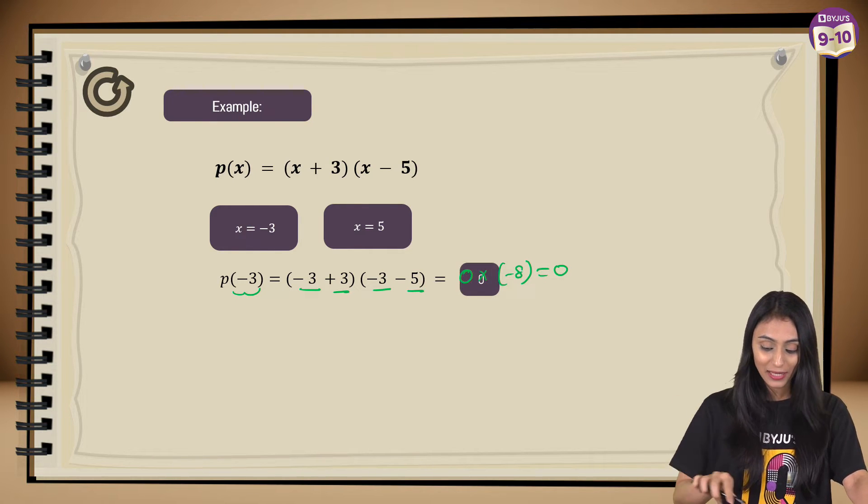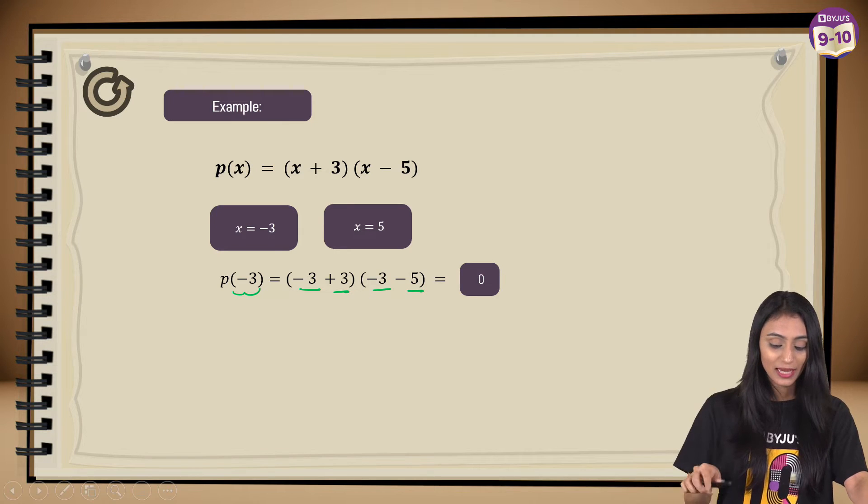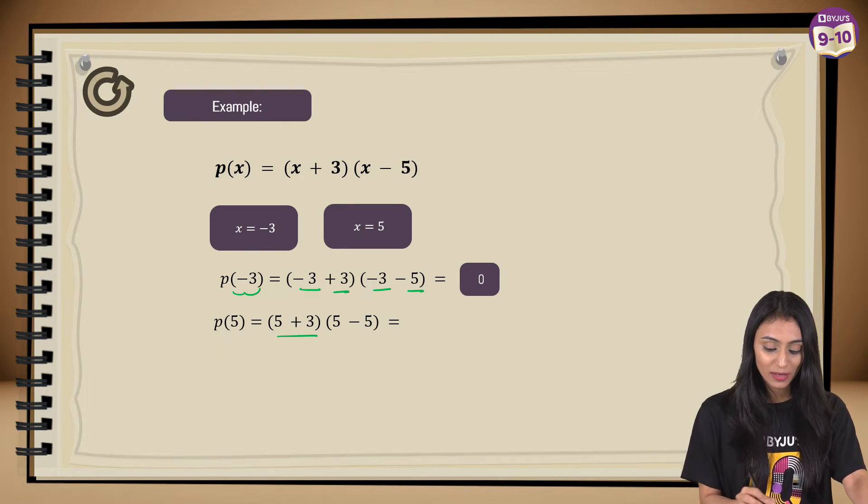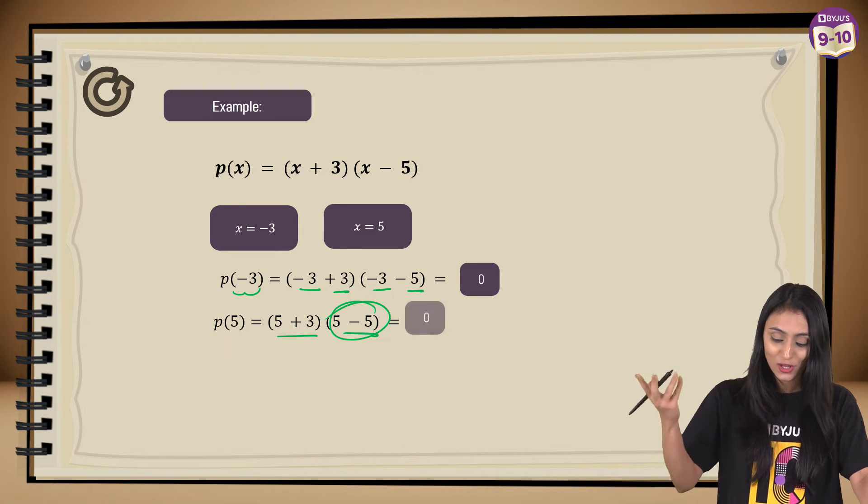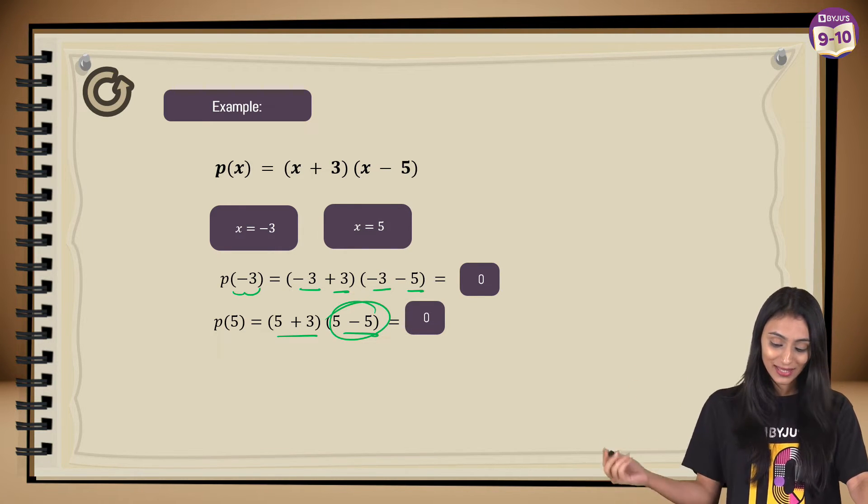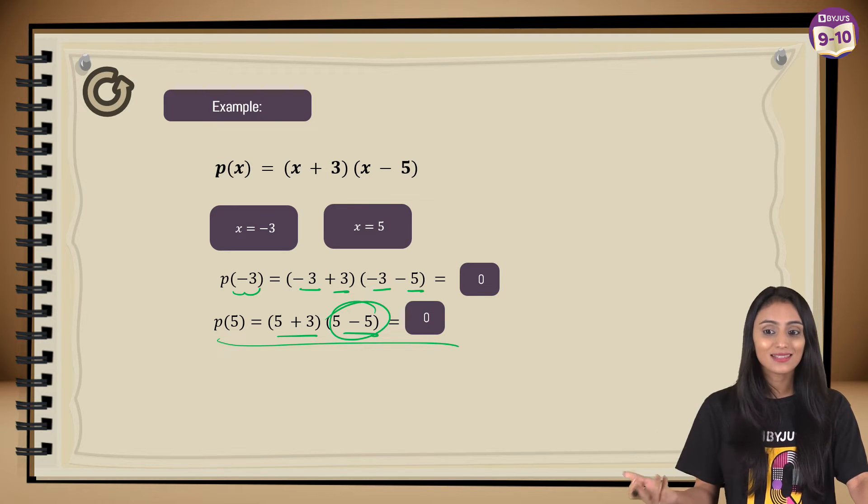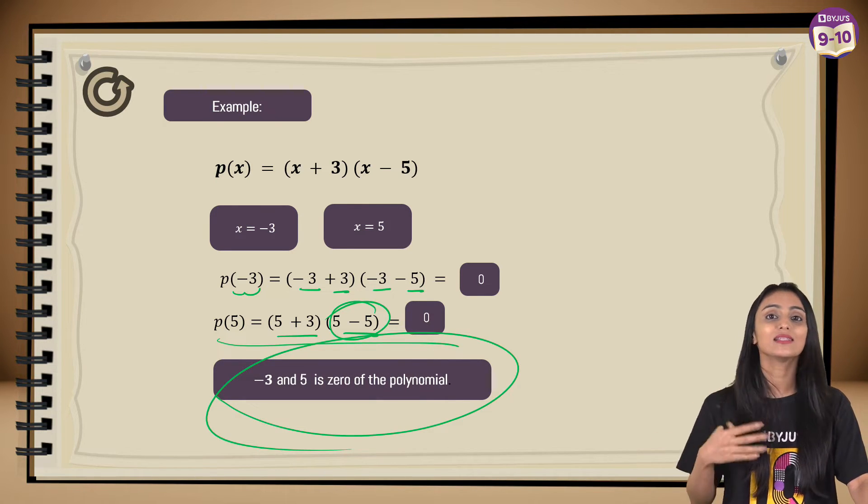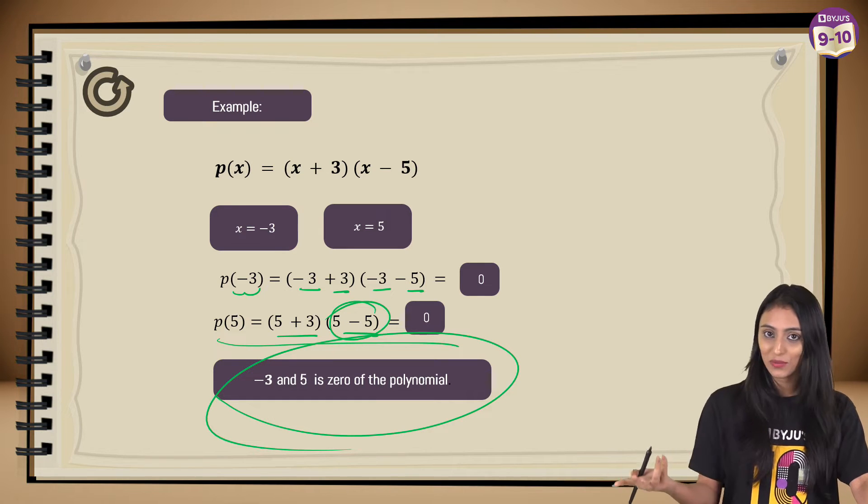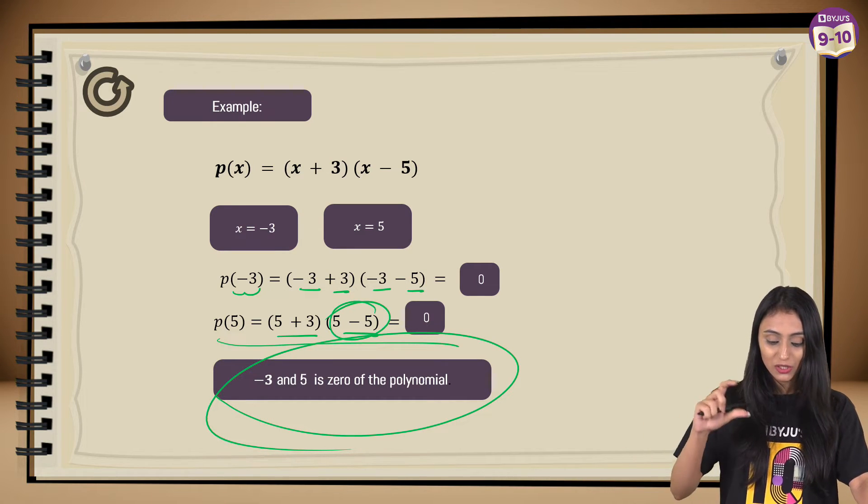Similarly, I can say that if I put 5, that's 5 + 3, 5 - 5. 5 - 5 is nothing, that's zero. Zero multiplied by anything is zero, so again it is equal to zero. I can say that 5 is nothing but the zero of this polynomial. So -3 and 5, I can say these are the zeros for the polynomial. That's how we find out the zeros.